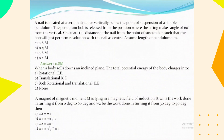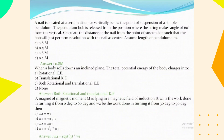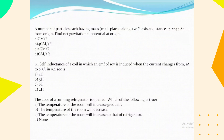When a body rolls down an inclined plane, the total potential energy converts into both rotational and translational kinetic energy. A magnet of magnetic moment M is in a magnetic field of induction B. W1 is the work done turning it from 0 to 60 degrees, and W2 is the work done turning it from 30 to 90 degrees; the relation is W2 = √3 × W1. A number of particles each of mass m are placed along the positive x-axis at distances r, 2r, 4r, 8r, and so on from the origin. The net gravitational potential at the origin is –4Gm/r.